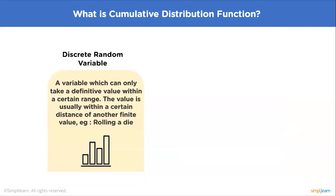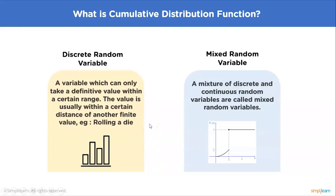A discrete random variable is the opposite of a continuous one. It can take a definitive value within a certain range, and values are usually a fixed distance from each other. For example, rolling a die gives six definitive values: one, two, three, four, five, and six. When you get a two, you mean exactly two — not 1.999 or 2.3. A discrete random variable has a countable, finite number of possible values.